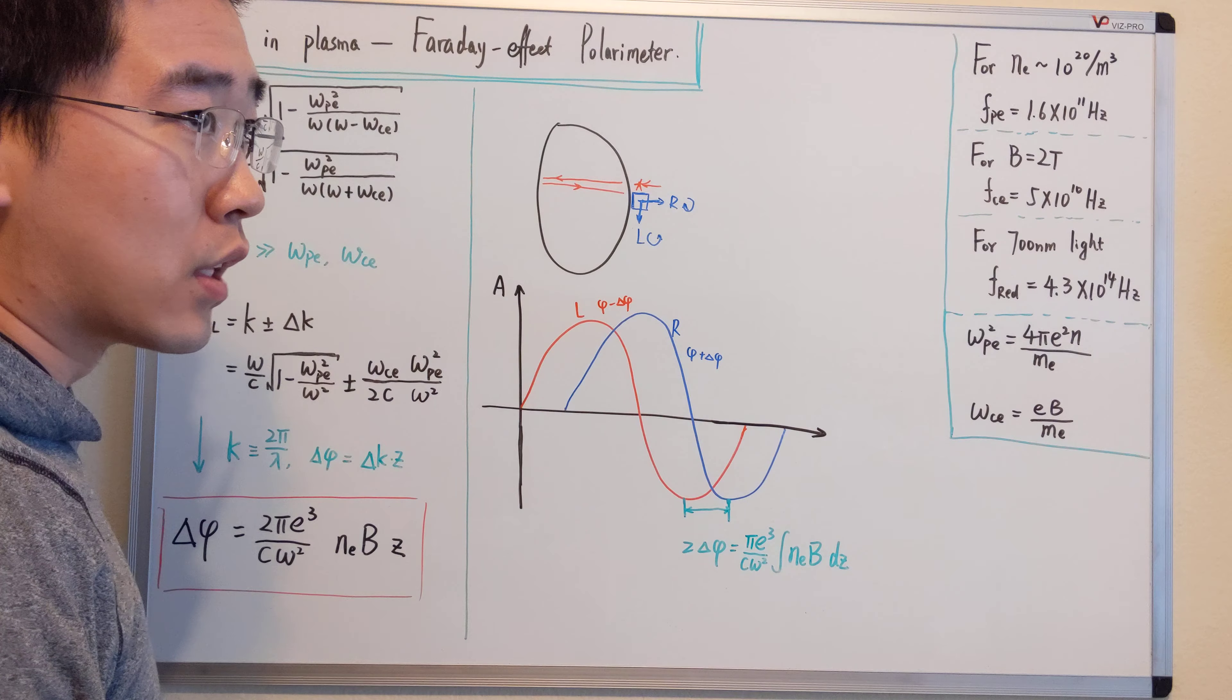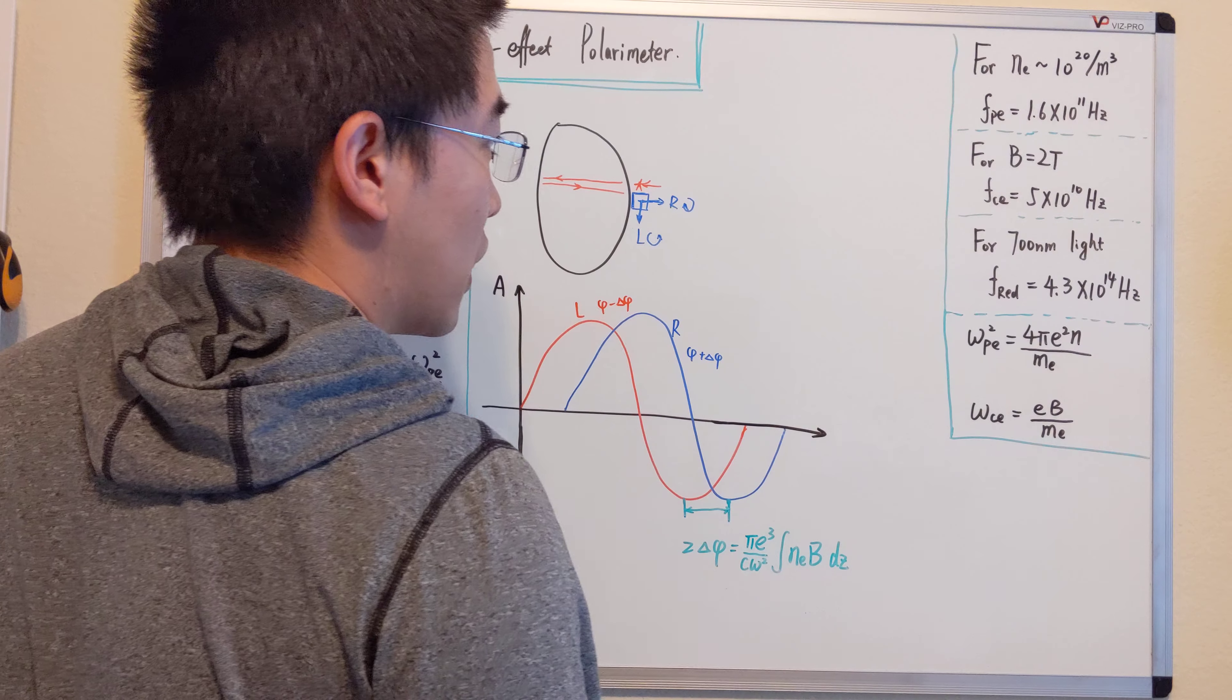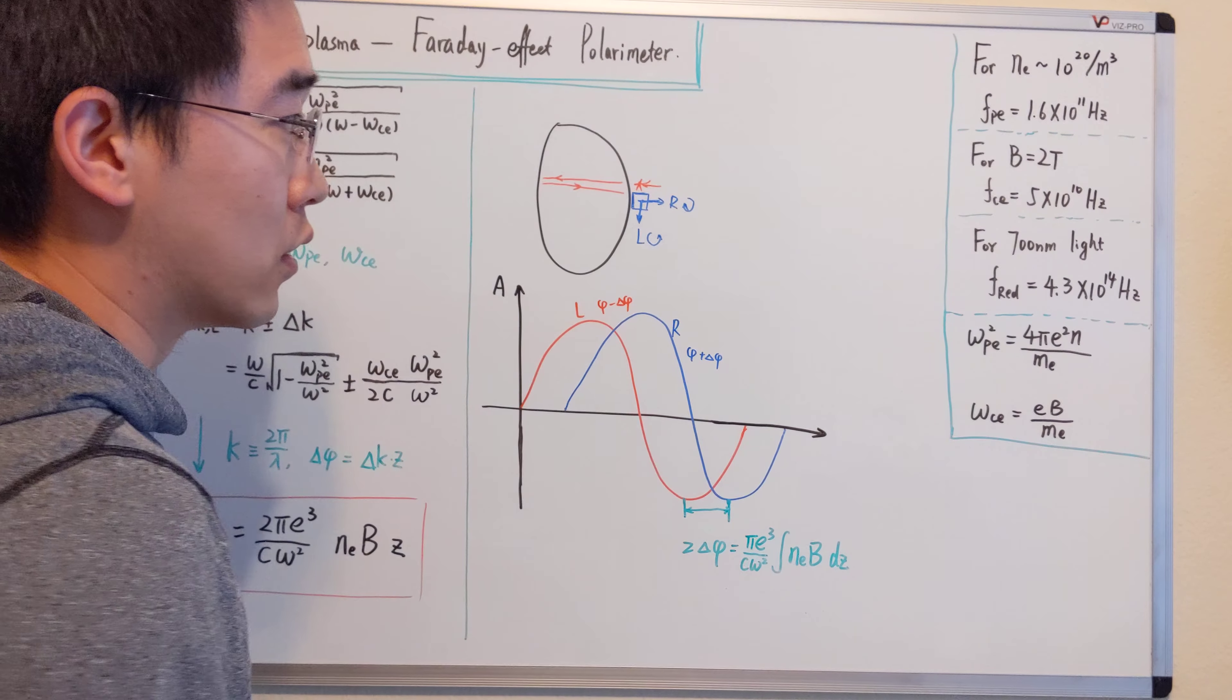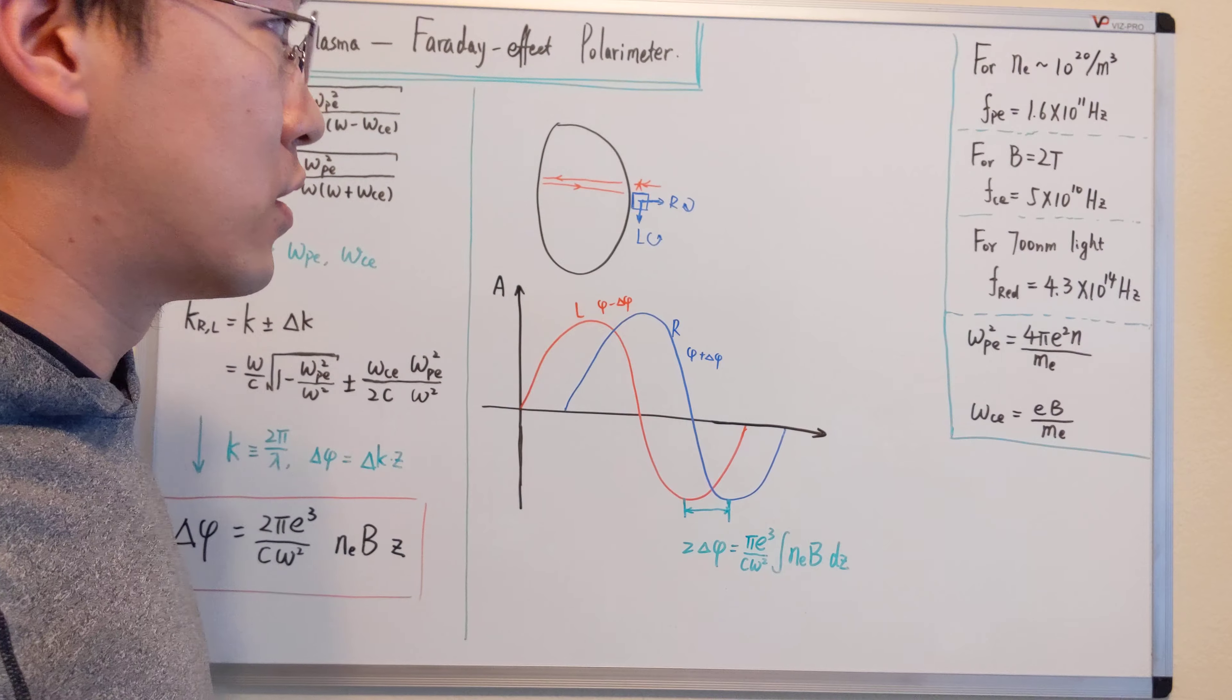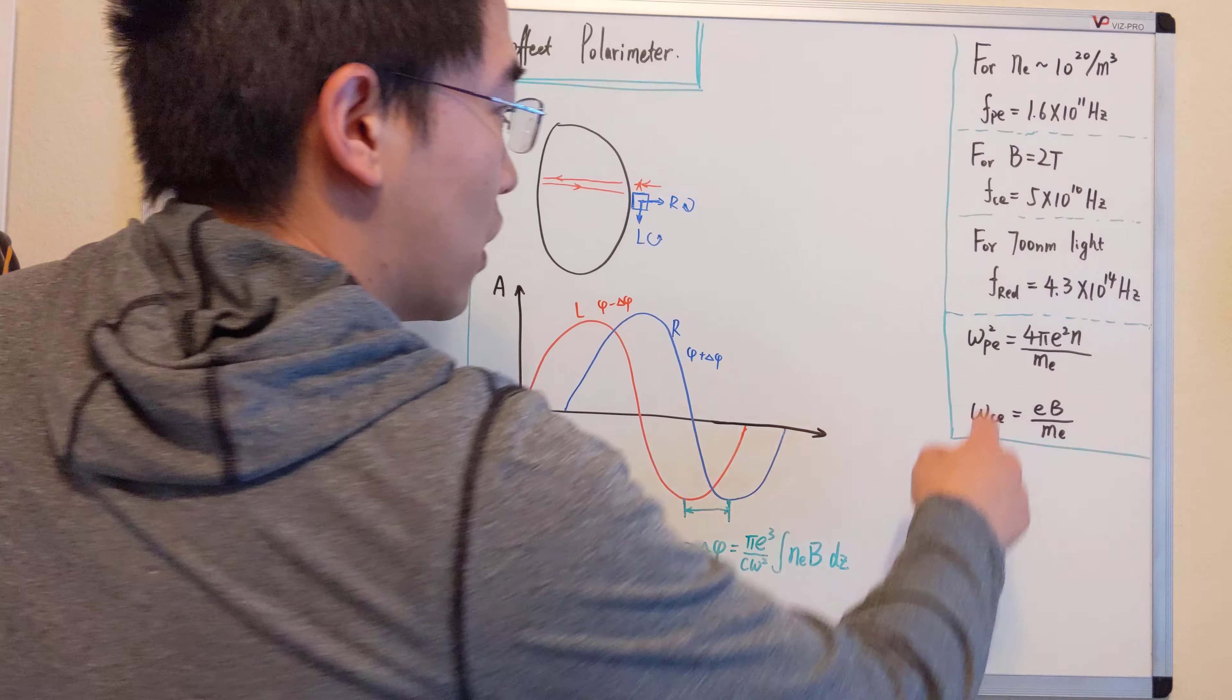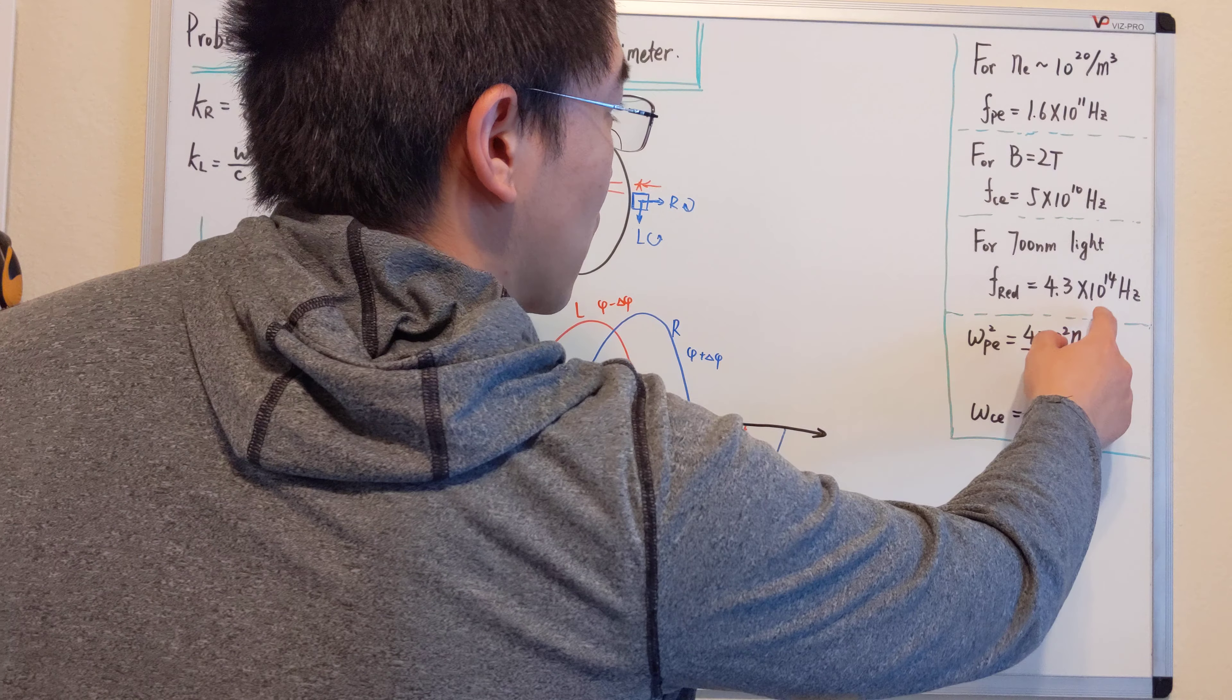For the two Tesla magnetic field, we have an electron cyclotron frequency around 5 times 10 to the 10 Hertz. For sake of argument, we will take a red light, 700 nanometer red light. That's around 4.3 times 10 to the 14 Hertz.